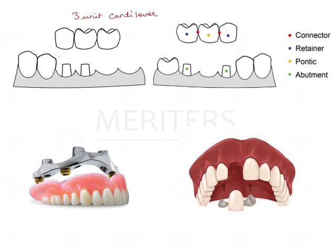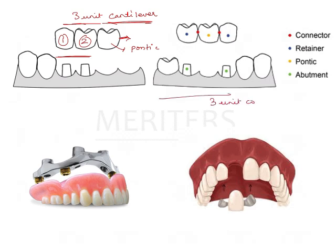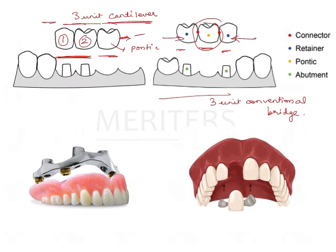In a three-unit cantilever bridge, there are two retainers and one pontic, but the pontic is not supported distally. In contrast, this three-unit conventional bridge also has one pontic and two retainers, but the pontic here is supported by retainers on both sides — unlike the cantilever configuration in the first image.